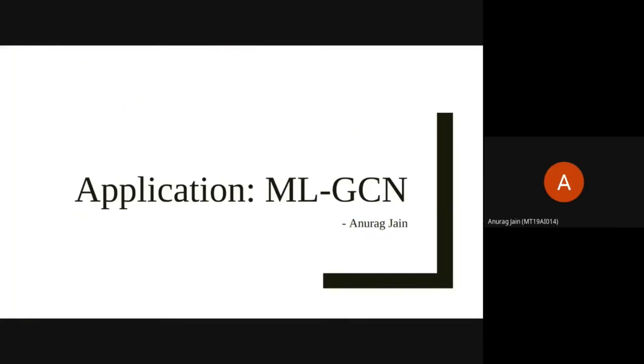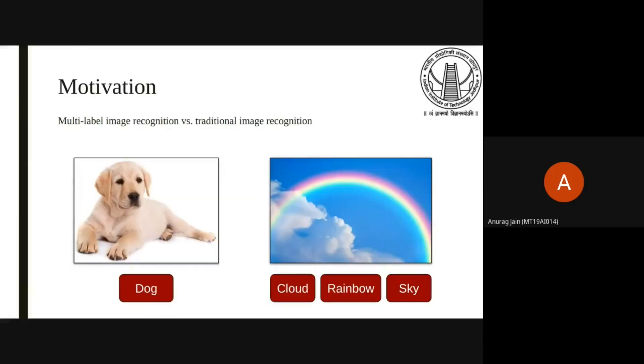In the last section of the presentation, we will jump into the application perspective of GCN. For that, we have chosen the paper multi-label image recognition with graph convolutional networks, which demonstrates how GCN can be beautifully used in image analysis applications. In multi-label image recognition, the task is to predict a set of object labels that are present in an image. In the left image, an example of traditional image recognition is shown where only single instance object dog is present. Unlike in the right image where different instances of classes are present like rainbow, clouds and sky.